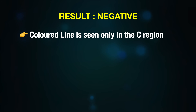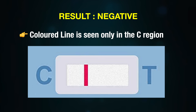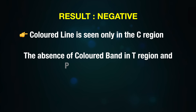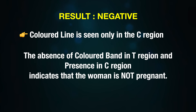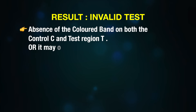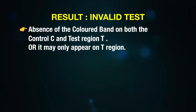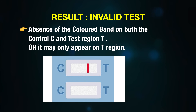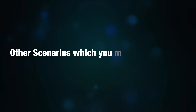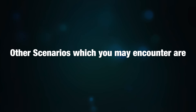When we say the test is positive, it means beta HCG is detected in the urine. If only one line is present — that is, only the C or control line — then it's negative. The absence of a colored band in the T region and presence only in the C region indicates the woman is not pregnant. If the colored band does not appear in both the control and test regions, it's an invalid test; if invalid, try again with another card.